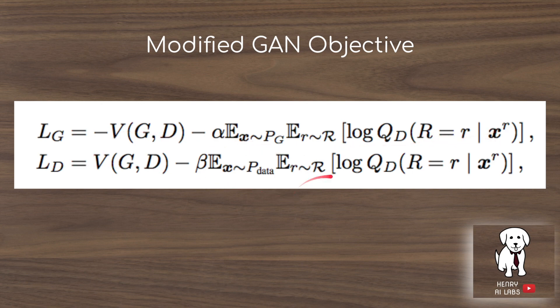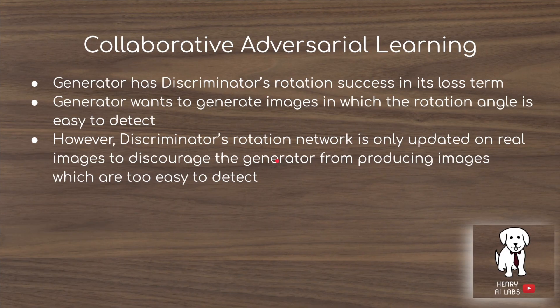On the discriminator side, you have the loss on the sample from the dataset, but the discriminator is not actually updated with how successfully it predicts the rotation on the generator. For this reason it's called collaborative adversarial learning, because the generator has the discriminator's rotation success in its loss term. So it's in the generator's best interest to produce images that the discriminator can successfully classify the rotation angle of. The generator and discriminator are adversarial with respect to the real/fake task, but they also have this other thing they're doing together.